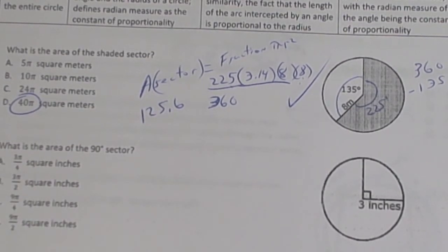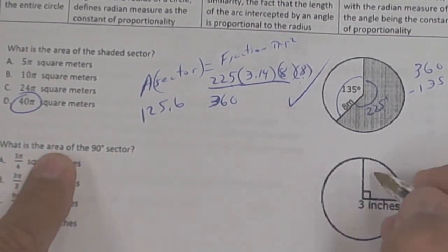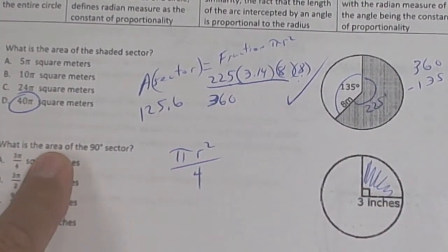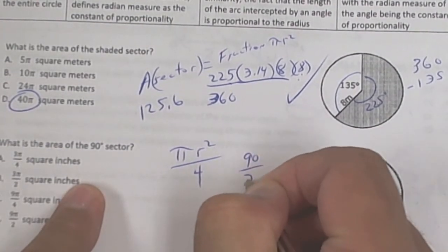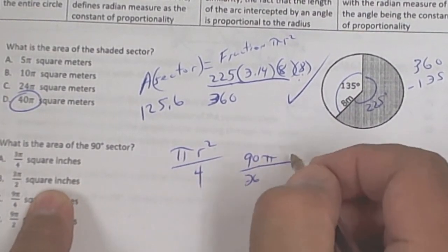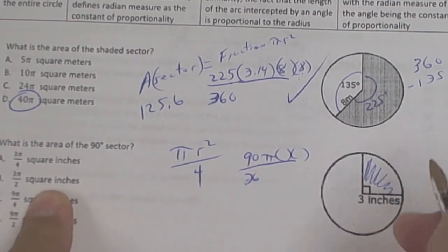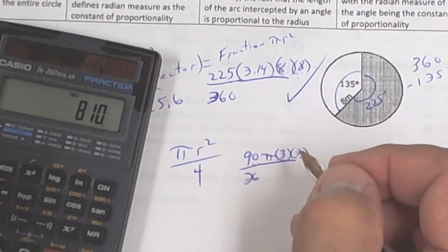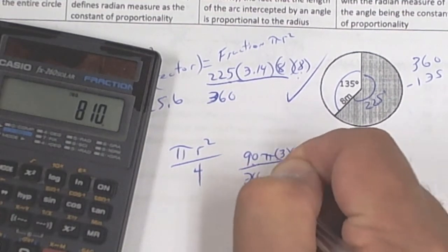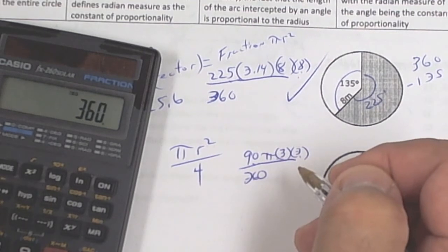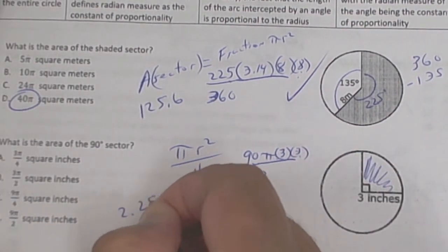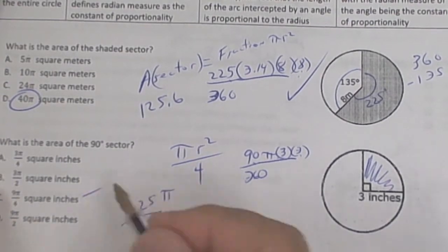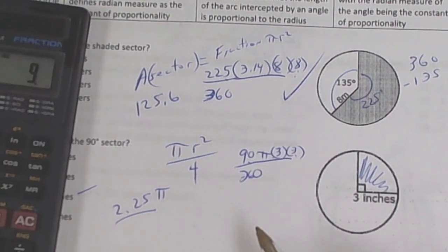The next problem asks for the area of a 90-degree sector. Since 90 degrees is a quarter of 360, it's a quarter of the whole circle. Using the formula: 90 over 360 times pi times radius squared, with radius 3, gives 9 times 90 divided by 360 equals 2.25π, which is 9 over 4 times pi. That matches the answer choice.